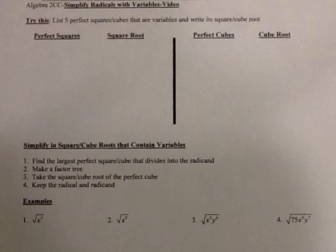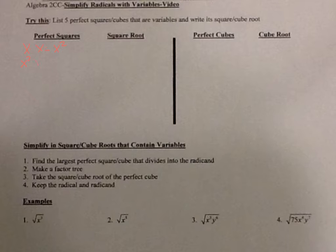Remember, a perfect square comes from multiplying a number by itself. So the first perfect square with variables would be x times x, which equals x squared. So x squared is a perfect square. x squared times x squared is x to the fourth, so x to the fourth is also a perfect square.